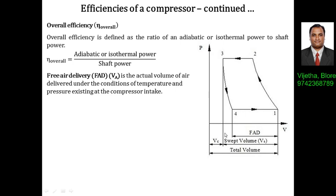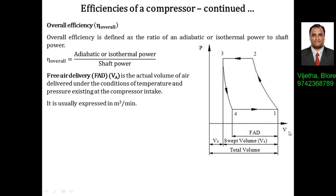During process 3 to 4, even though swept volume exists, no fresh air enters the cylinder. Air only enters during process 4 to 1, once the pressure inside the compressor cylinder falls below atmospheric pressure. This portion — 4 to 1 — is called free air delivery. It is the actual volume of air delivered under conditions of temperature and pressure existing at the compressor intake, expressed in m³/min. It is denoted as VA or V1 minus V4, while swept volume is V1 minus V3.